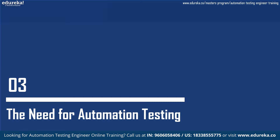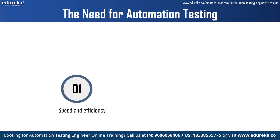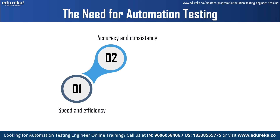Automation testing is crucially valued in the field of quality assurance. Specialized software tools are required to perform tests and compare the actual result to the expected result. One key reason is speed and efficiency: automation testing is much faster than manual testing because it can run a large number of tests in a fraction of the time. This is crucial for keeping up with the fast-paced nature of software development and preventing testing from becoming a bottleneck. Next is accuracy and consistency — because tests are pre-programmed and run the same way every time, automation testing eliminates the possibility of human error.